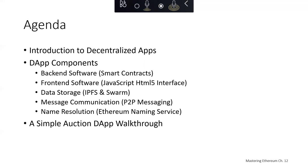We're going to take a look at decentralized apps. We'll talk about some different components within decentralized apps — back-end software like smart contracts, front-end software like JavaScript. We'll talk about ways in which you can do decentralized data storage via IPFS and Swarm. We'll talk about decentralized message communication and decentralized name resolution leveraging the Ethereum naming service. Then we'll take a look at an auction decentralized app and how it uses all these different components.